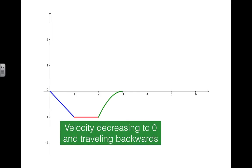Now the velocity is decreasing because it's gone from minus one and it's working its way back to zero, and the object is still traveling backwards.